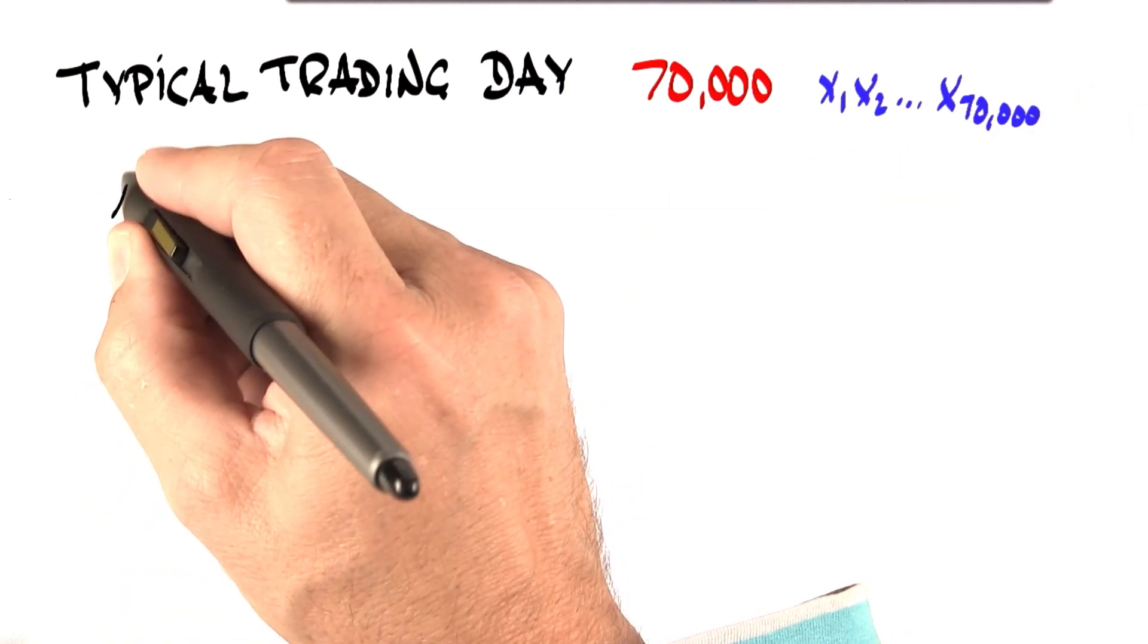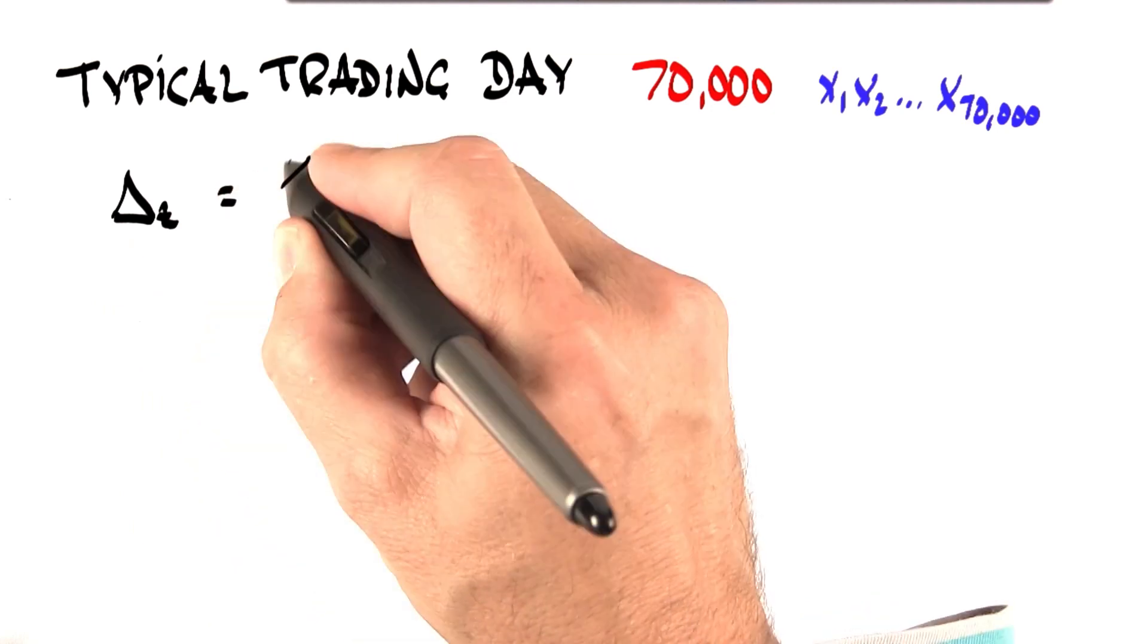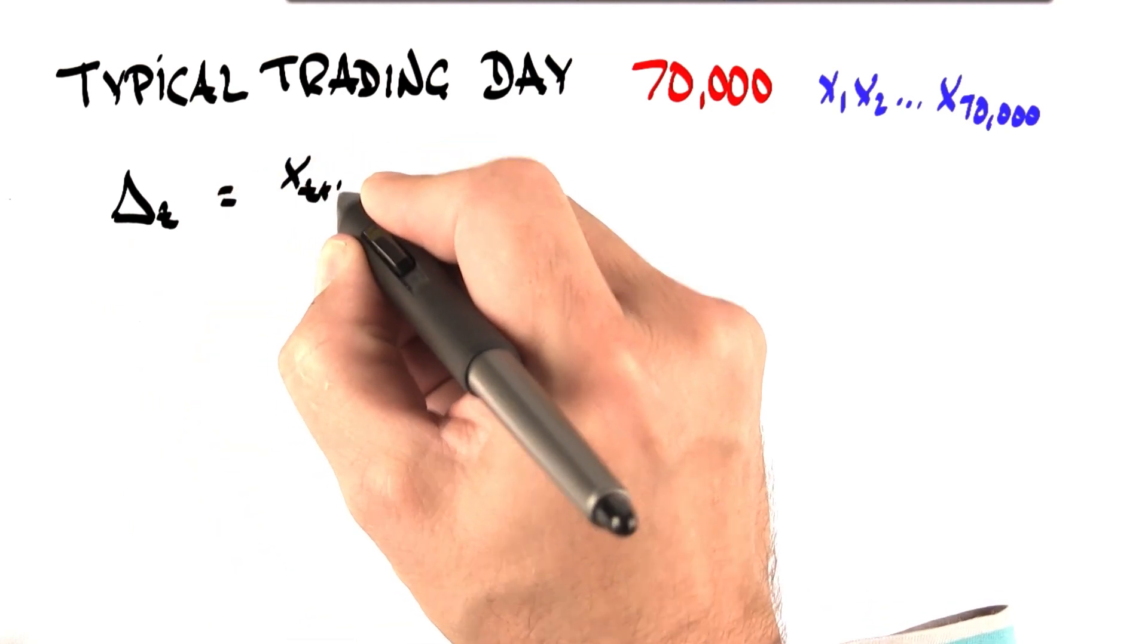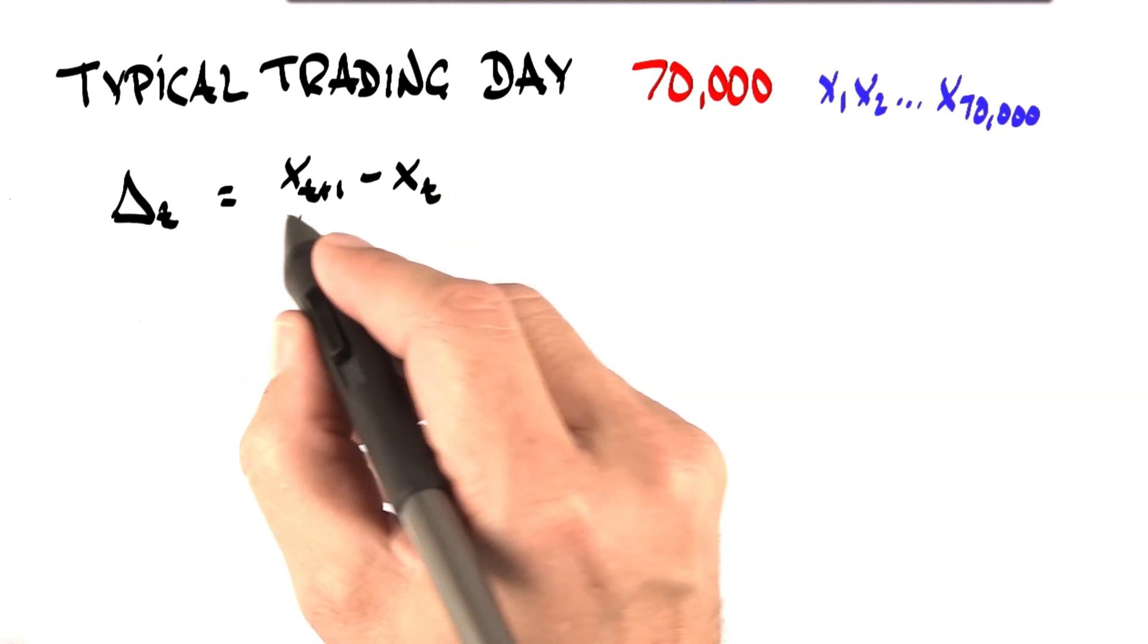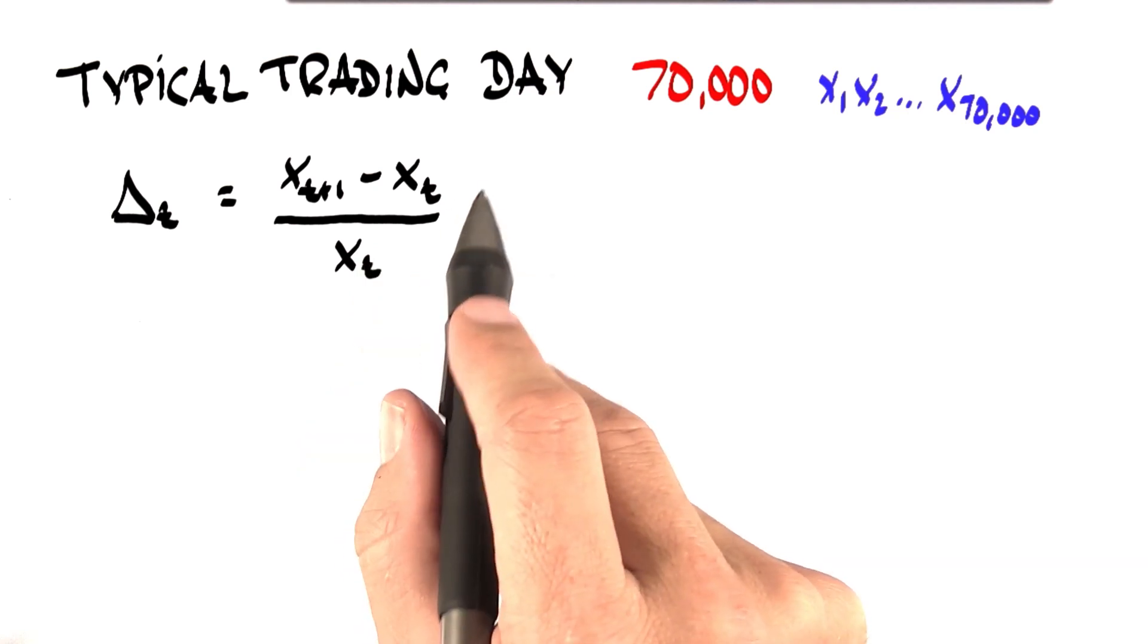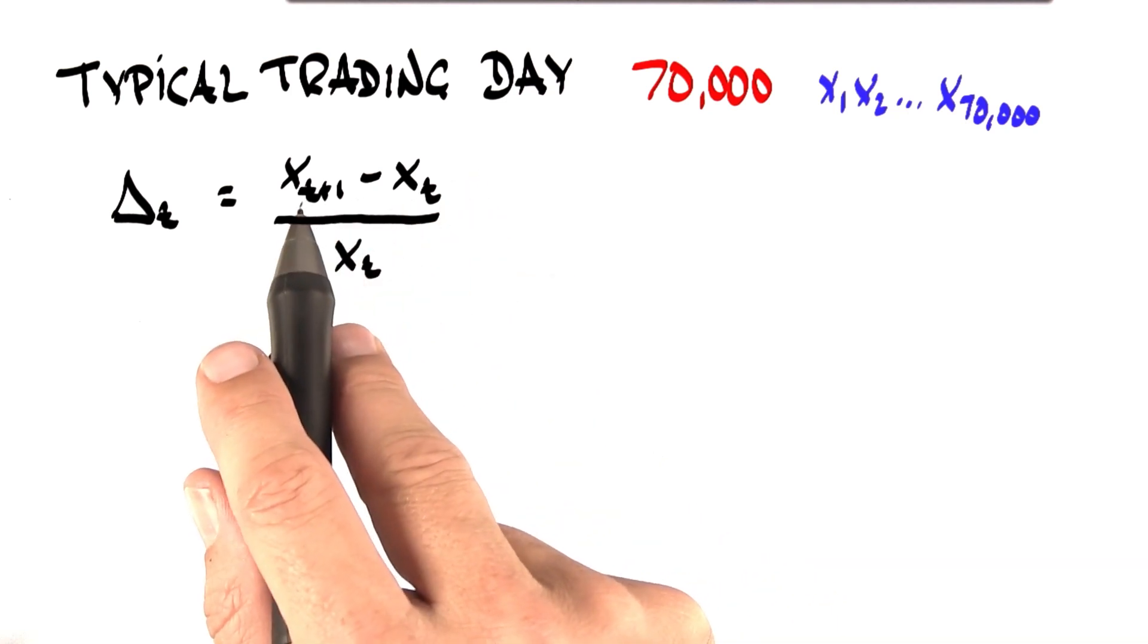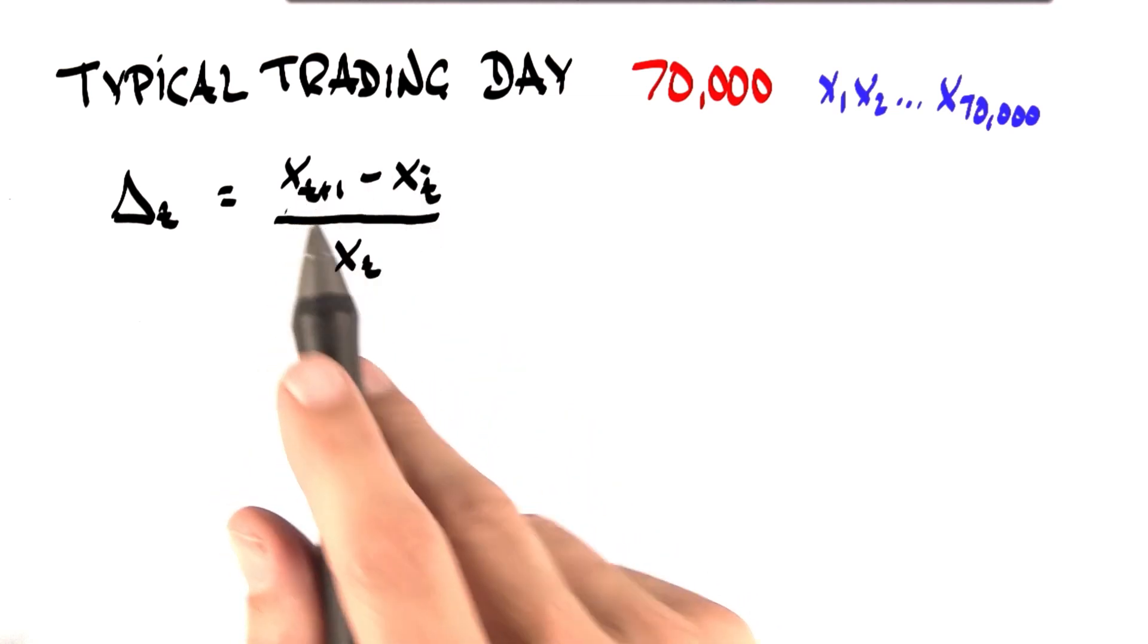What we'll be looking at is the percentage change between adjacent trades, which we call delta t. And that's defined as the difference between two consecutive trading points, x(t+1) minus x(t), normalized by x(t). So normally if x(t) and x(t+1) is the same, this would be 0. If there's a big difference, then this is a larger value.